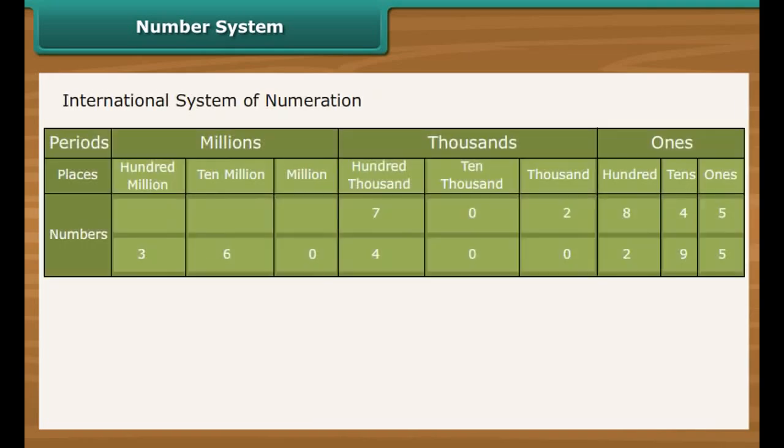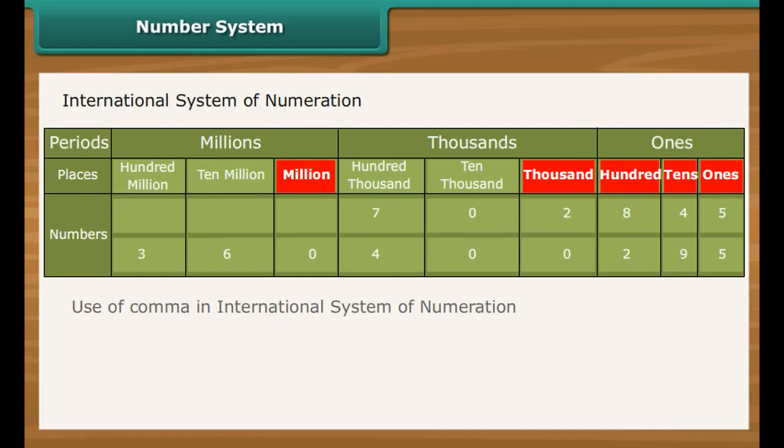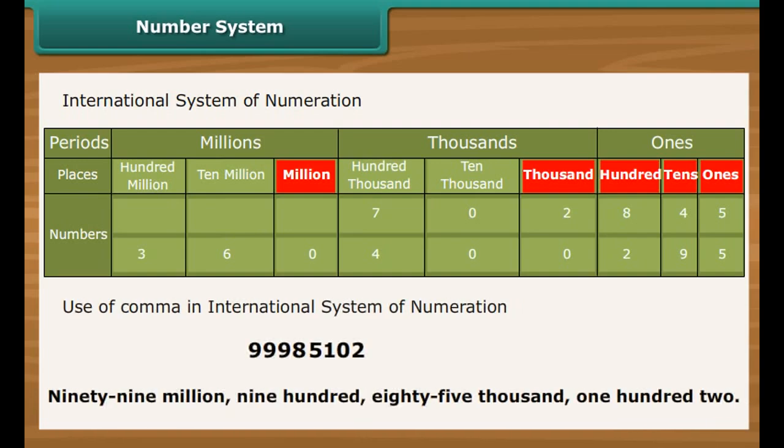In the international system of numeration, as it is being used, we have ones, tens, hundreds, thousands, and then millions. One million is a thousand thousands. Commas are used to mark thousands and millions. It comes after every three digits from the right. The first comma marks thousands and the next comma marks millions. Let us look at some pointers.